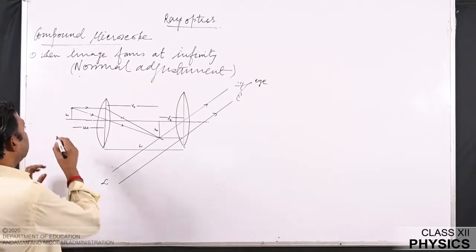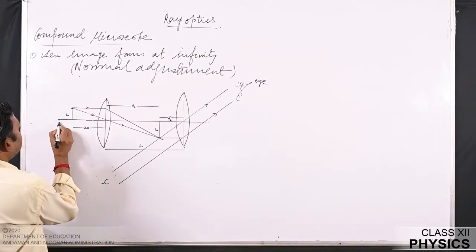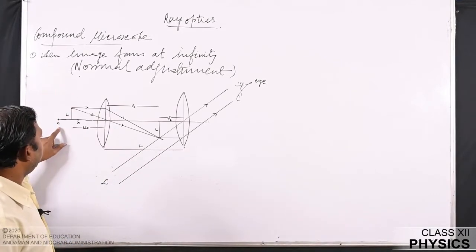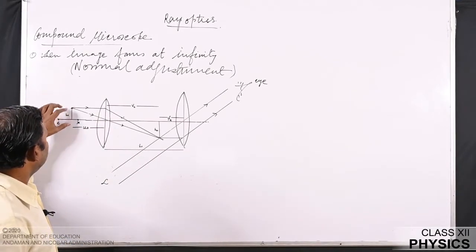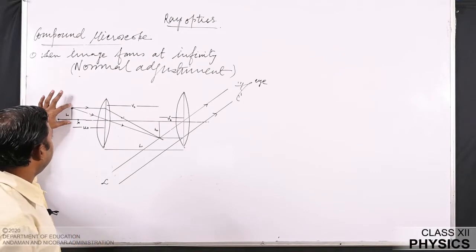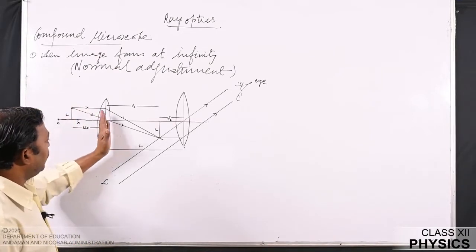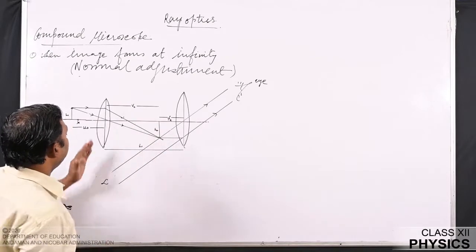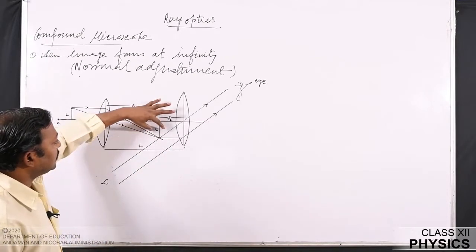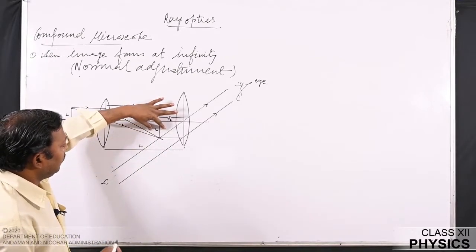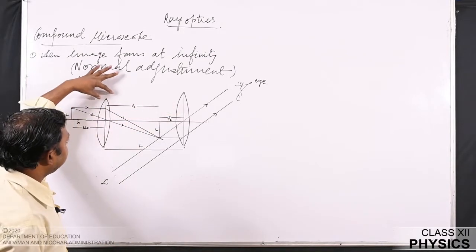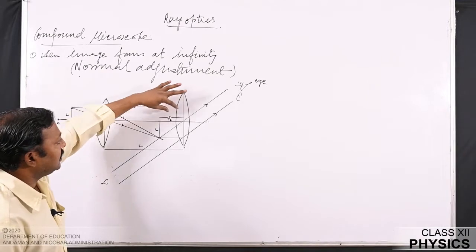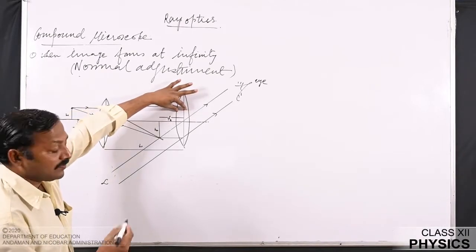The object is placed between the focus and the center. H1 is the object placed between the focus and the center. The image of this object is formed beyond the lens, at a distance v₀ from the objective lens, and this image formed by the objective lens acts as an object for the second lens.